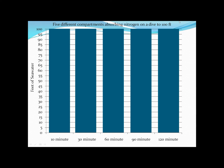We have our chart that we were familiar with from the video on compartments, and we can add M values to see how M values, half times, and compartments work together. The 10-minute compartment has a 75-foot M value, the 30-minute compartment a 47.5-foot M value, the 60-minute compartment a 30-foot M value, the 90-minute compartment 25 feet, and the 120-minute compartment 22.5 feet. Let's watch these compartments loading over time on a dive to 100 feet and see which compartment hits its M value first.